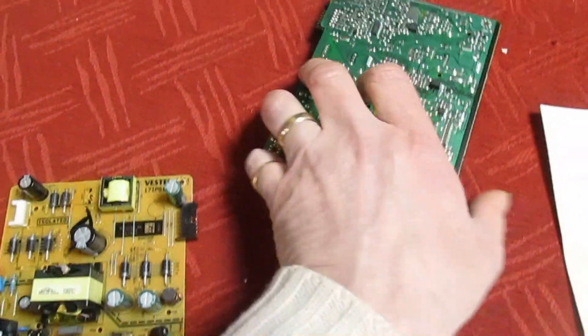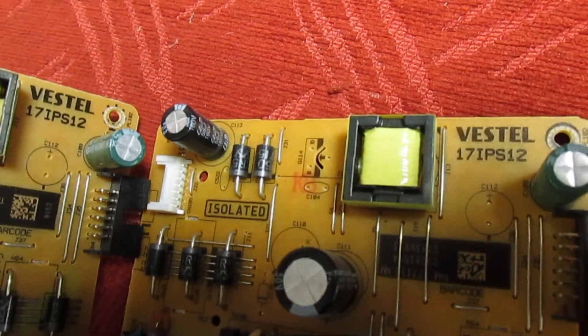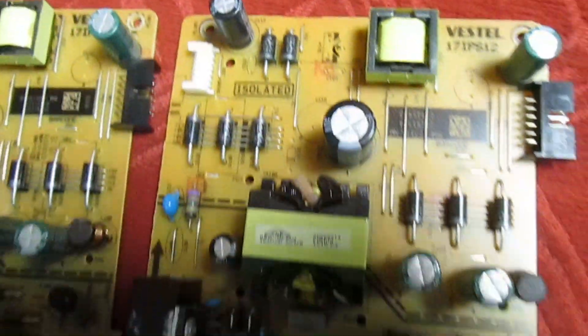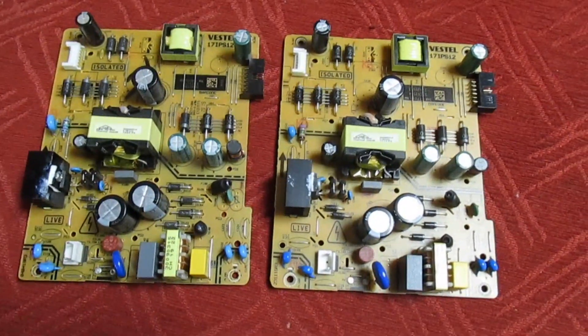Important when you actually order one of these is not to order it by the number on the corner of the power supply, the 17 IPS number, but actually to order it by the model number or the production number on the back of the TV.